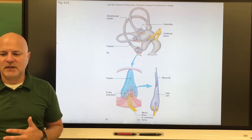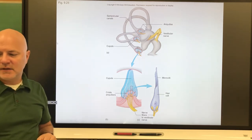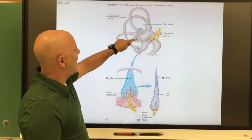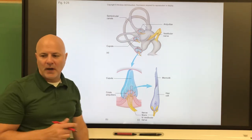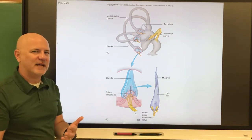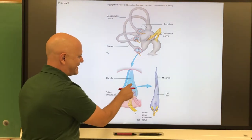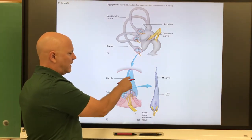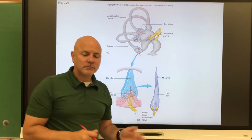Dynamic equilibrium is the maintenance of balance when the head and body are suddenly moved or rotated. This occurs in the semicircular canals, which contain endolymph. The base of each canal is a swelling called an ampulla, and inside each ampulla is a structure called the crista ampullaris. Like the macula, the crista ampullaris has hair cells and supporting cells, and those hair cells project into a cone-shaped gelatinous material called the cupula.